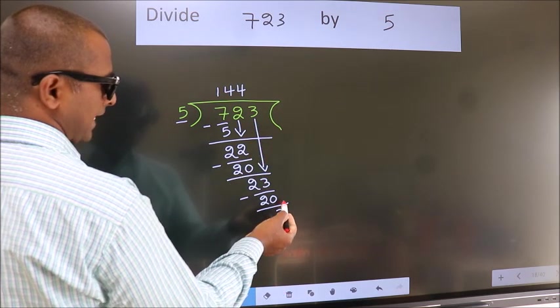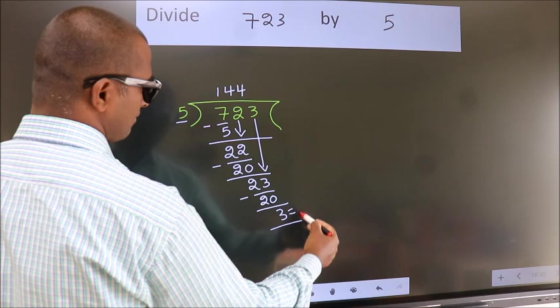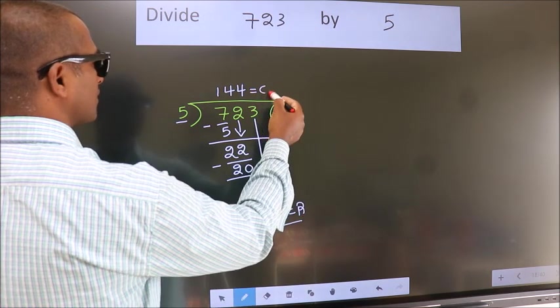No more numbers to bring down. So we stop here. This is our remainder. This is our quotient.